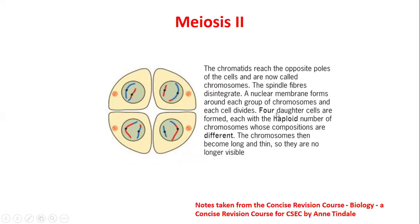The chromatids reach the opposite poles and we now have four daughter cells, each with the haploid number of chromosomes.